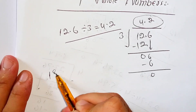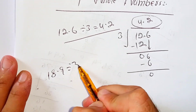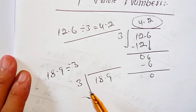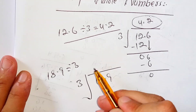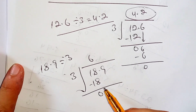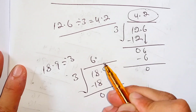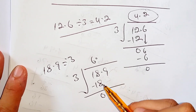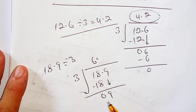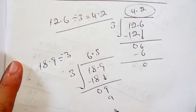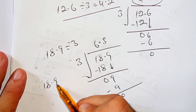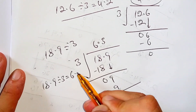Now let's take another example: 18.9 divided by 3. How many times does 3 go into 18? 3 times 6 is 18. Subtract 18 from 18 — remainder is 0. Put the decimal point in the quotient just above the decimal point in the dividend, then bring down the 9. How many times does 3 go into 9? 3 times 3 is 9. Subtract — remainder is 0. So 18.9 divided by 3 equals 6.3.